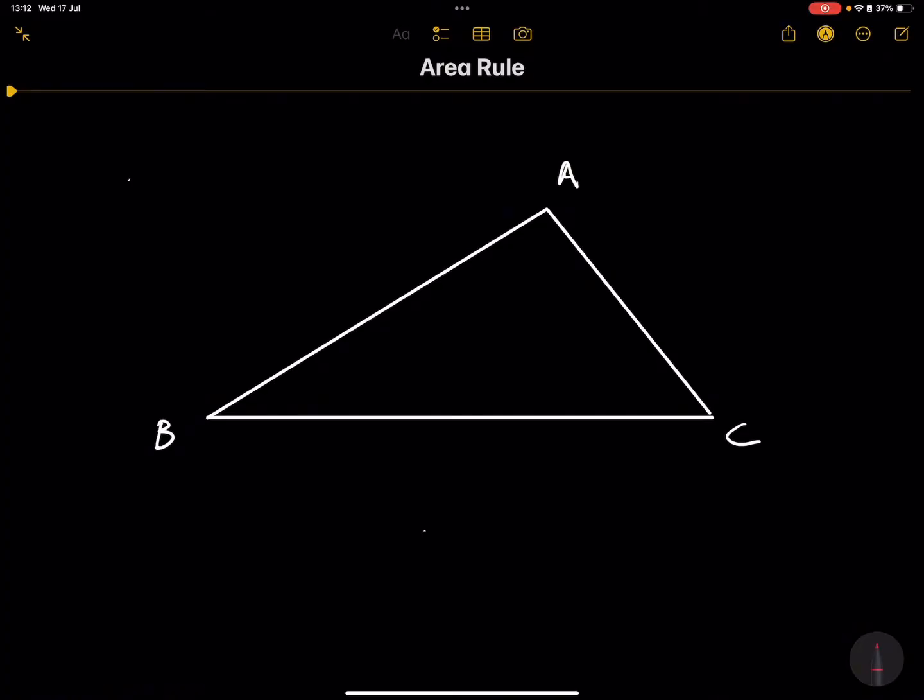So the first thing that we always do whenever we're trying to prove the area rule is I'm going to have triangle ABC. I am going to draw a line AD. Let's call that D over there.